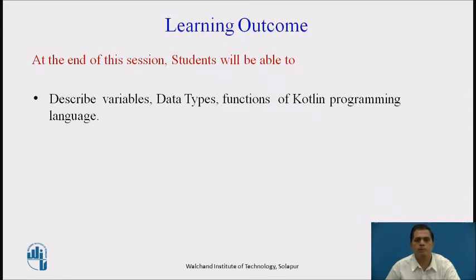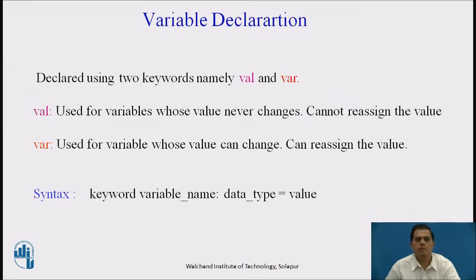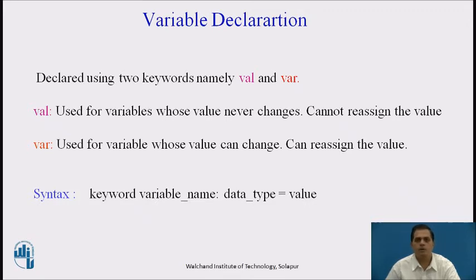Before going to variable declaration, we have seen in the last slide what Kotlin is and where and for what purpose it is used. Kotlin is a programming language used for development of Android applications. In Kotlin there are a number of data classes, boilerplate generations, strings, and other components that a developer can use for app development.